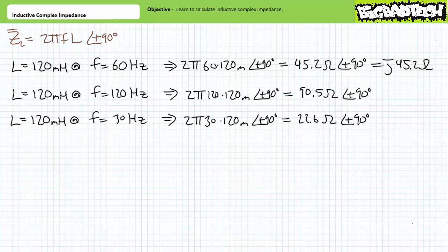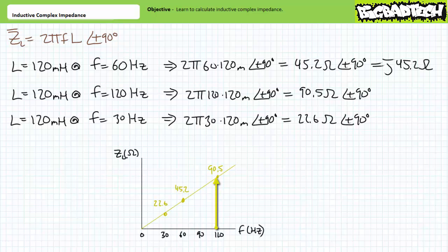Decreasing frequency decreased inductive complex impedance. The larger point: increasing frequency increases the magnitude of purely inductive complex impedances, while the angle remains fixed at positive 90 degrees. In contrast, decreasing frequency decreases the magnitude of purely inductive complex impedances, while the angle remains fixed at positive 90 degrees. If we were to perform the same analysis at three times, a third, four times, a quarter, five times, a fifth, and so on of our original frequency, we should find that the magnitude of the complex impedance of inductors presents a directly proportional relationship to frequency, and that a plot of the magnitude linearly increases as frequency increases.